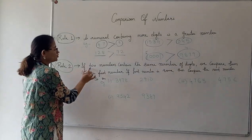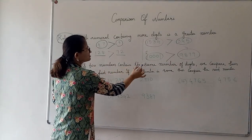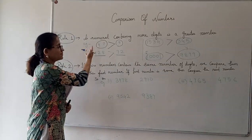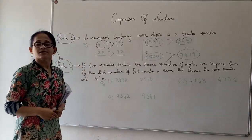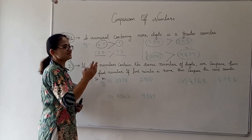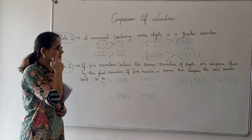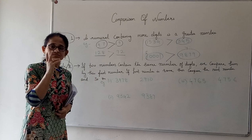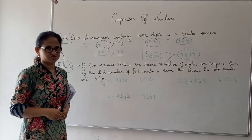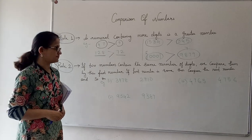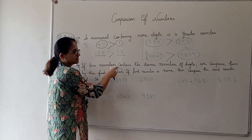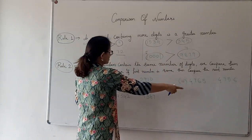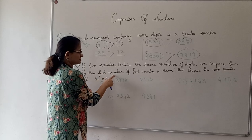Rule number 2: if two numbers contain the same number of digits. In the previous case there were different numbers of digits. But if the numbers have the same number of digits, how do we compare them? If two numbers contain the same number of digits, we compare them by their first digit.